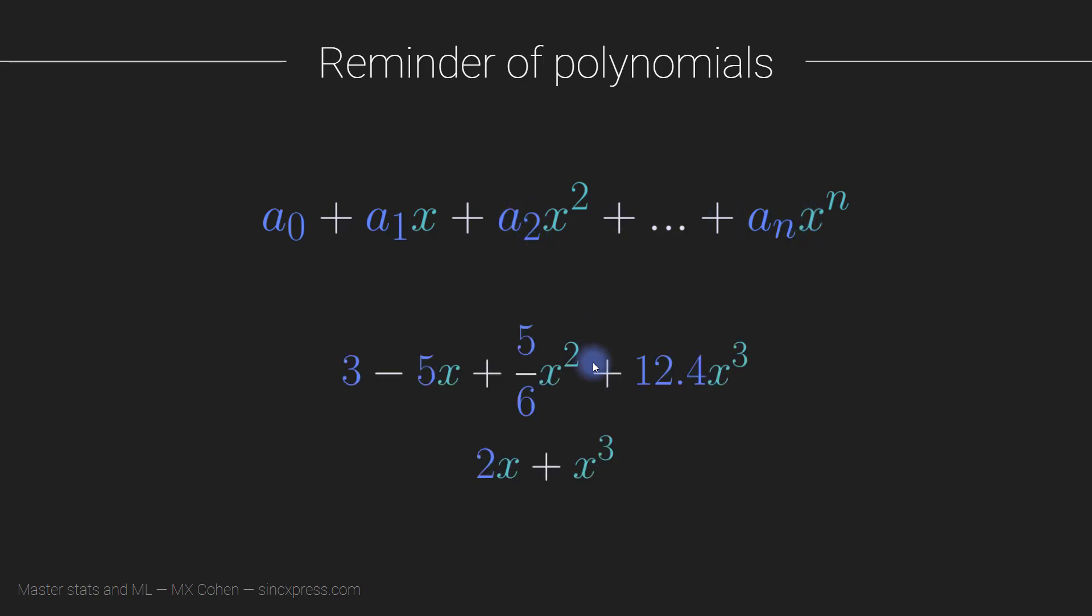Here are two examples of polynomial expressions. So you see, this would correspond to a0, this 5/6 here would correspond to a2, and so on. Now, for a polynomial, you don't need to have every single x term in here. You can just imagine that in this example, a2 would be equal to zero. So you could think of writing zero times x squared, but in practice, that's just left out. Same thing here, a0 is also set to zero.